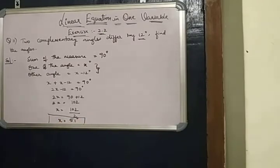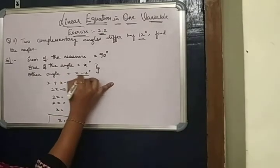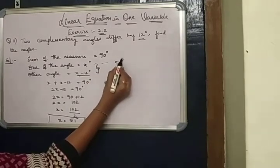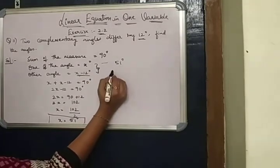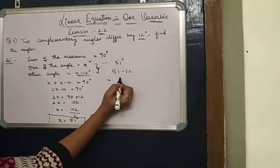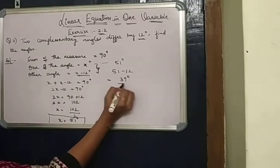51 degrees, and other angle means x minus 12. Here, the x is equal to 51 degrees, so x minus 12 means 51 minus 12, the other angle is 39 degrees.